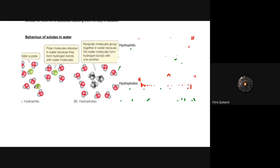So when we think about the behavior of solutes in water, we recall that water is polar, and those polar molecules can dissolve in water because they form those hydrogen bonds and hydration shells with the water molecule. Nonpolar molecules group together in water because the water molecules that form hydrogen bonds with one another won't want to have anything to do with those nonpolar molecules.